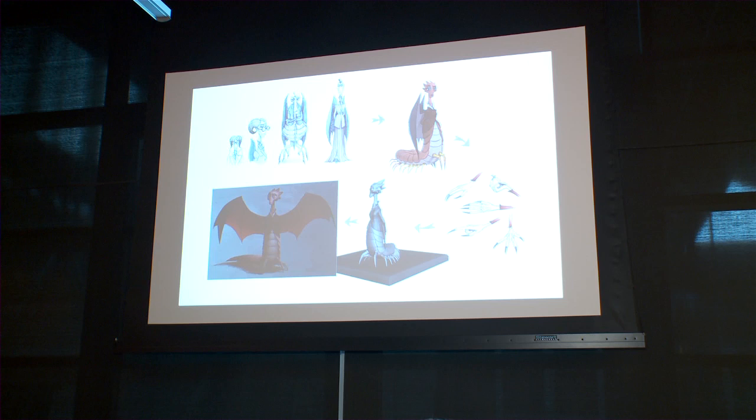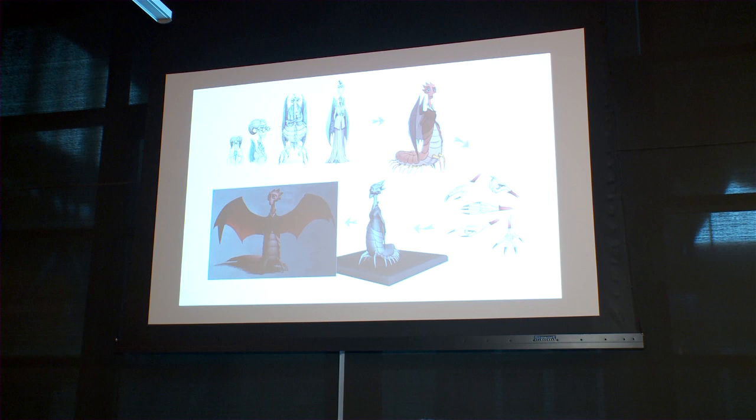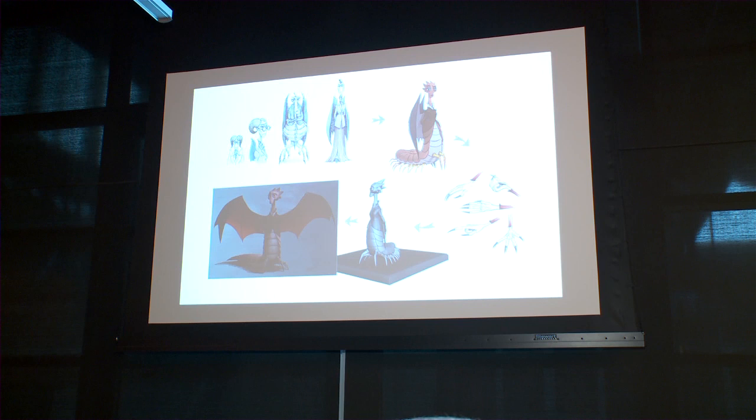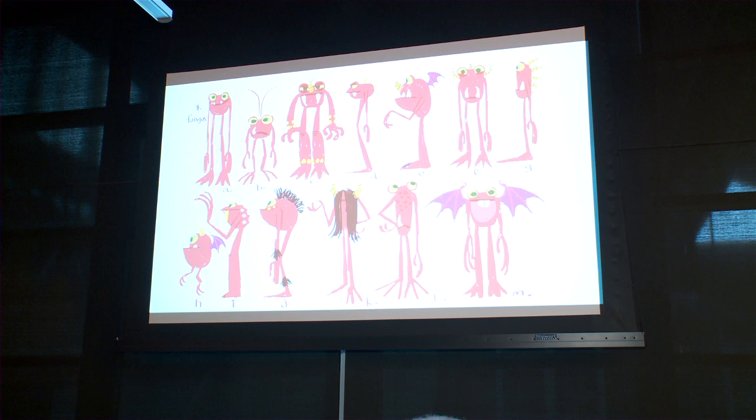Traditionally, when we design characters, we spend a lot of time on paper figuring out exactly what they're going to look like, then we work with a sculptor, sculpt it in 3D, and spend weeks and weeks trying out painting different textures on the character before we even begin the modeling process. But after looking at the boards and knowing we had more than 300 background characters to build, we knew that wouldn't work — we don't have 15 years to make the movie.